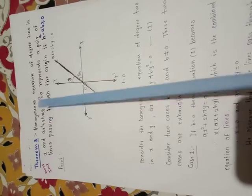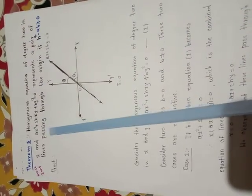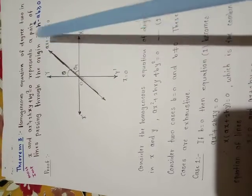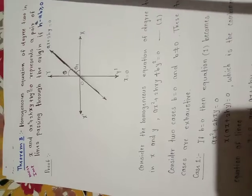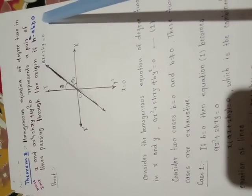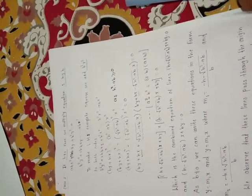In the last lecture we studied the most important theorem: the homogeneous equation of degree 2, ax² + 2hxy + by² = 0, represents a pair of lines passing through the origin if h² - ab ≥ 0. Today we are going to start the remarks of this theorem.